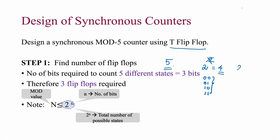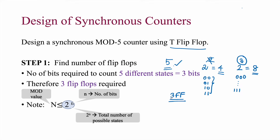Then we have to go for 3 bits of data, that is 2 to the power 3 which equals 8 — from 000 up to 111 — giving us 8 possible states. But we want only 5, therefore we need a minimum of 3-bit data, meaning 3 T flip-flops are required to achieve a mod-5 counter.